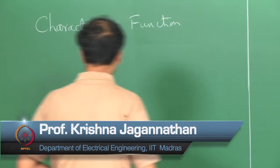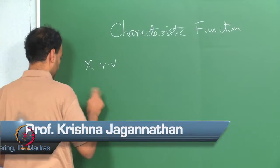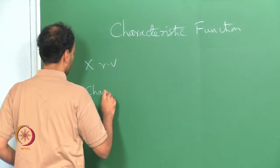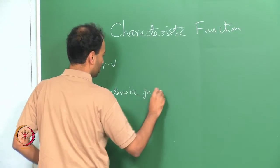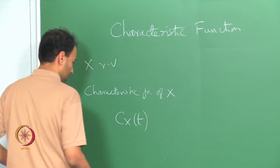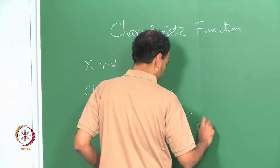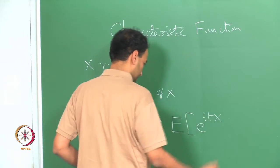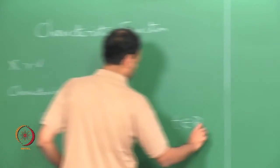Welcome back. Today we will discuss characteristic functions. So if x is a random variable, then the characteristic function is defined as follows: c_x of t is defined as the expectation of e to the power i t x, where t is some real number.